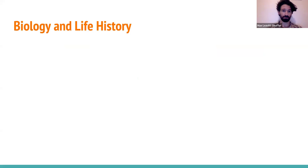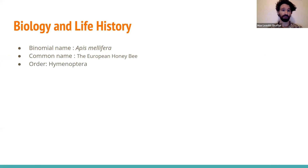Their Latin binomial name is Apis mellifera, and their common name is the European honeybee. They're a member of the order Hymenoptera, which includes ants, bees, and wasps. On the right here we have a phylogenetic tree, used to show the evolutionary history of species and how they relate to one another. You can see ants, bees, and wasps — Hymenoptera — and then Lepidoptera, butterflies, and then regular flies. It looks like Hymenoptera is the ancestor of those two groups.